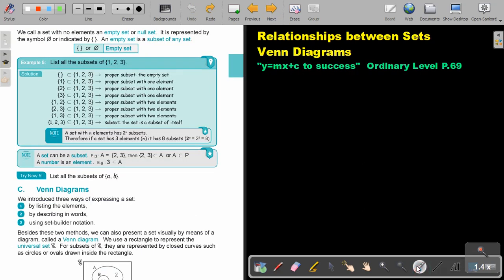Let's start here. We call a set with no elements an empty set or null set. It is represented by the symbol, so it's almost like a zero with a cross through, or indicated by curly brackets with nothing inside. An empty set is a subset of any set. So if I ask you in the next one, list all the subsets of 1, 2, and 3. Remember, it can be proper subsets, it can be subsets, all of them. So start with an empty bracket.